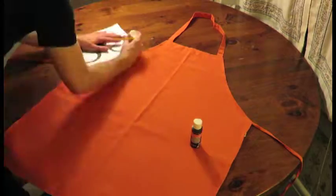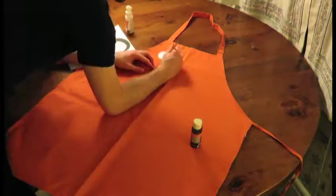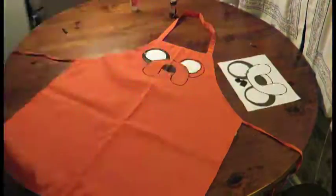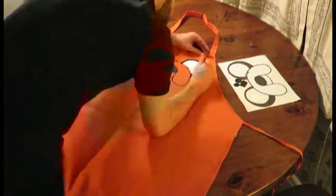Now that your design is on the apron, we start painting. Begin with his white eyes and then start outlining his face with black paint. Add black paint to his nose and around his eyes.